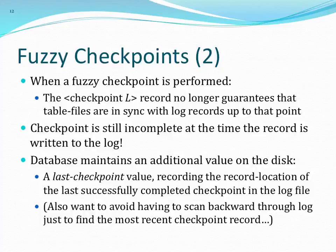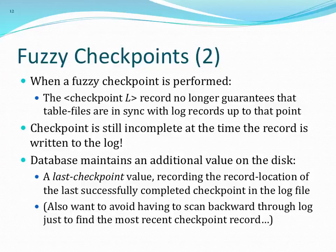The last safe offset in the write-ahead log corresponds to the last point you performed an fsync. Since we fsync after every commit to ensure durable transactions, we can record the log offset of the last commit in the checkpoint file. Everything after that belongs to incomplete transactions, so we don't care. As long as we follow the write-ahead logging rule, we're always okay.